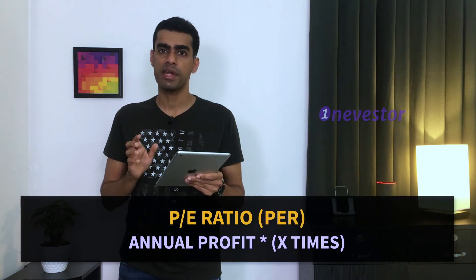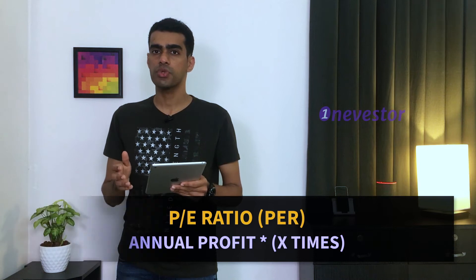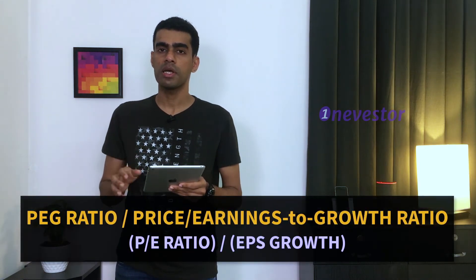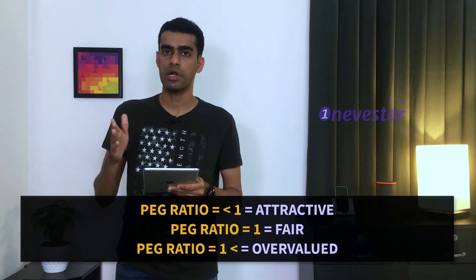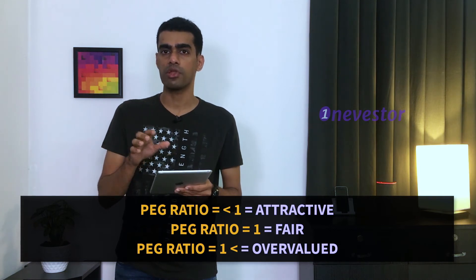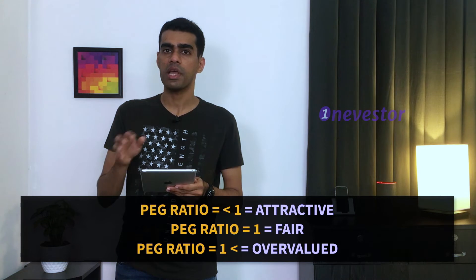The PE ratio is the price divided by the annual profit (earnings per share). If the PE ratio is 30 and the profit growth is also 30, the stock is fairly valued. The PEG ratio adjusts the PE ratio for growth — a lower PEG ratio indicates the stock is more attractively valued.